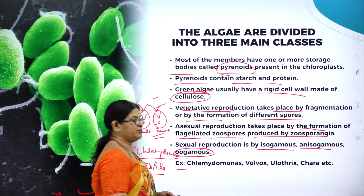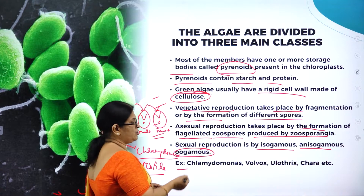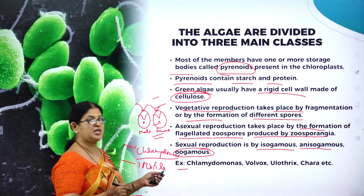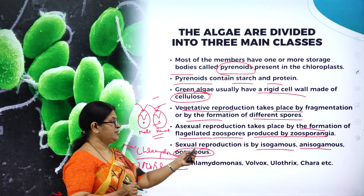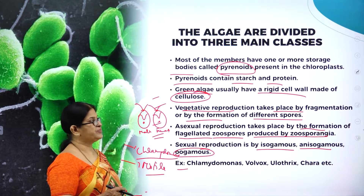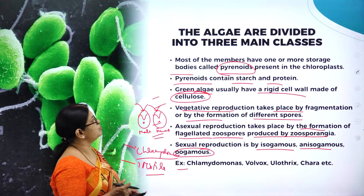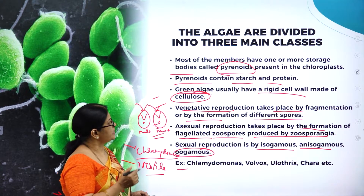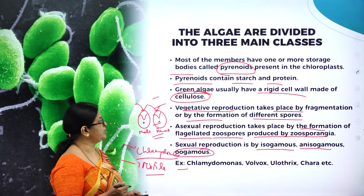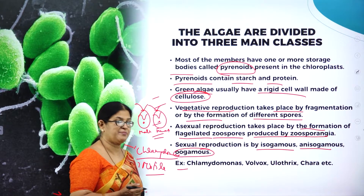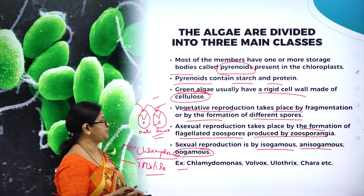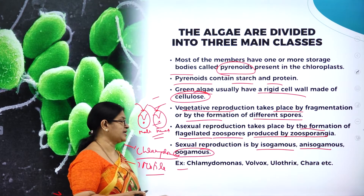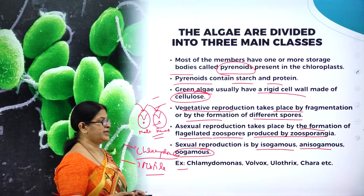Examples of Chlorophyceae include Chlamydomonas, Volvox, Ulothrix, and Chara. To summarize: most members have pyrenoids containing starch and protein; the rigid cell wall is made up of cellulose; vegetative reproduction is by fragmentation or by motile zoospores; and sexual reproduction is by isogamy, anisogamy, or oogamy.